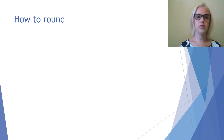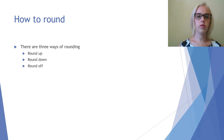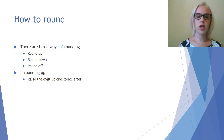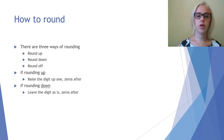How to round. There are three ways of rounding: you can round up, you can round down, or you can round off. If you're rounding up, raise the digit that you're rounding to up one and then put zeros after that. If you're rounding down, leave the digit as is and have zeros after that.